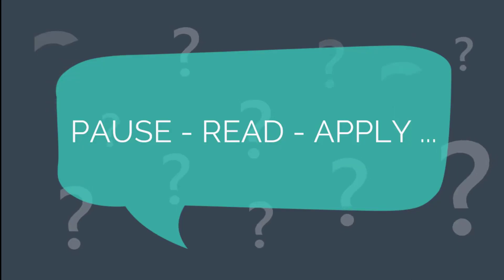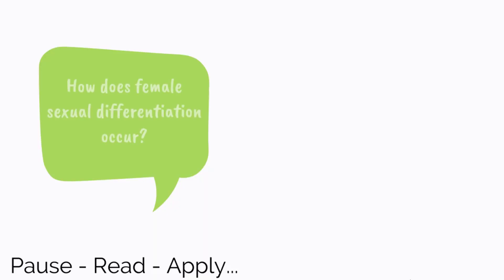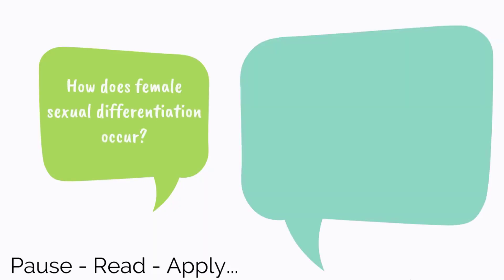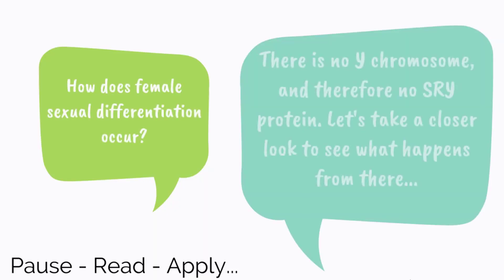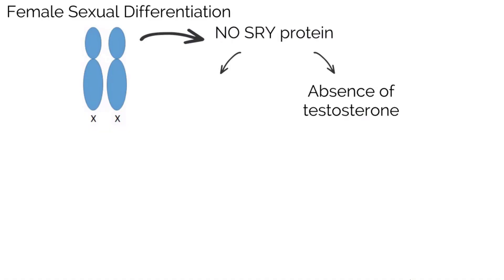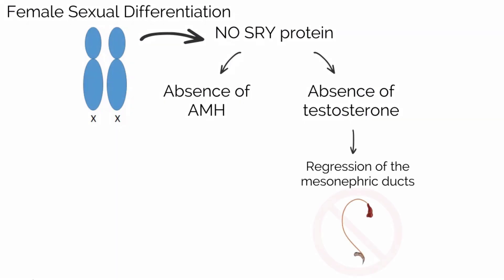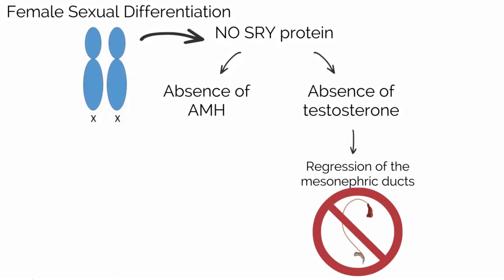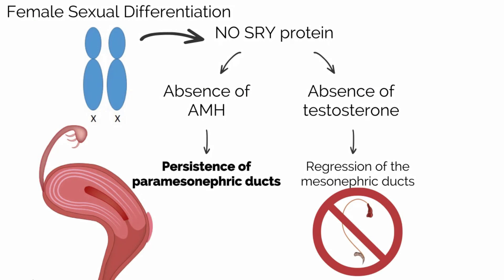Let's pause and apply: how does female sexual differentiation occur? There is no Y chromosome, and therefore no SRY protein. If there is no Y chromosome, there is no production of SRY protein, and therefore no production of testosterone and anti-Müllerian hormone. This leads to regression of the mesonephric ducts and persistence of the paramesonephric ducts.